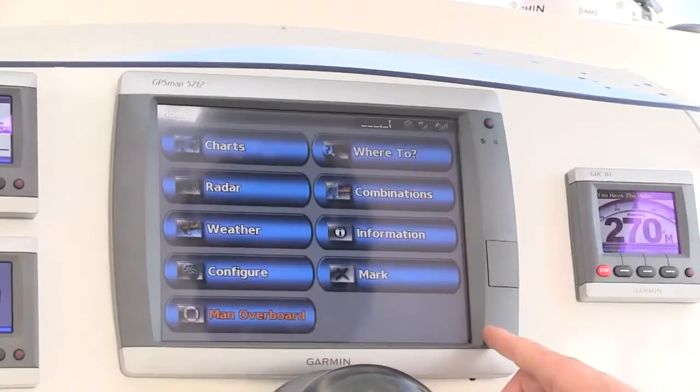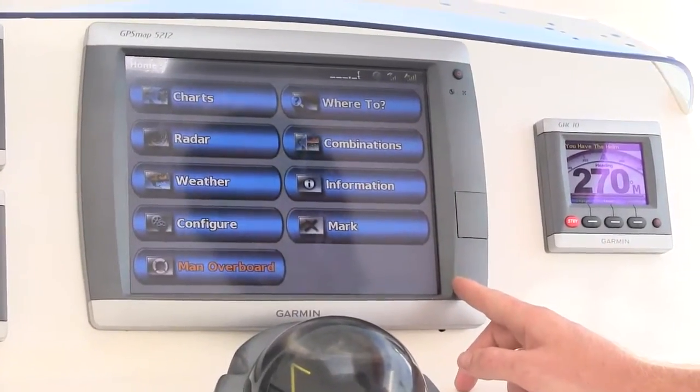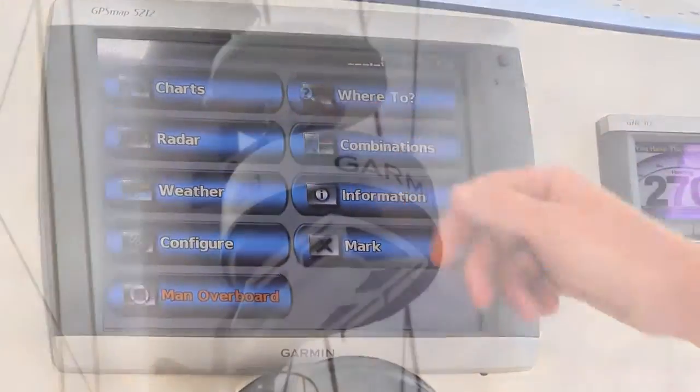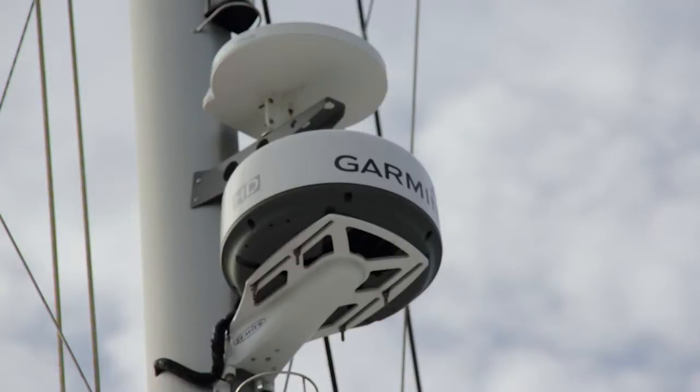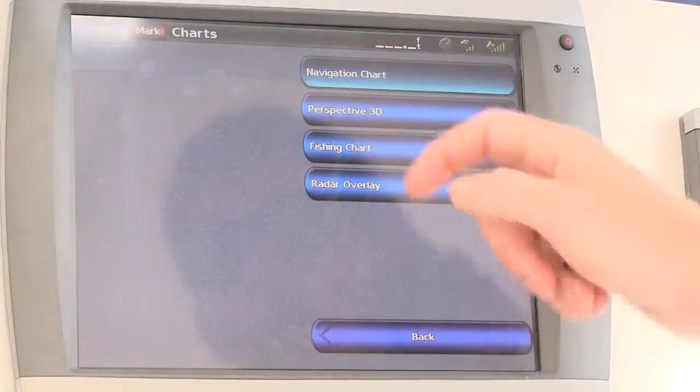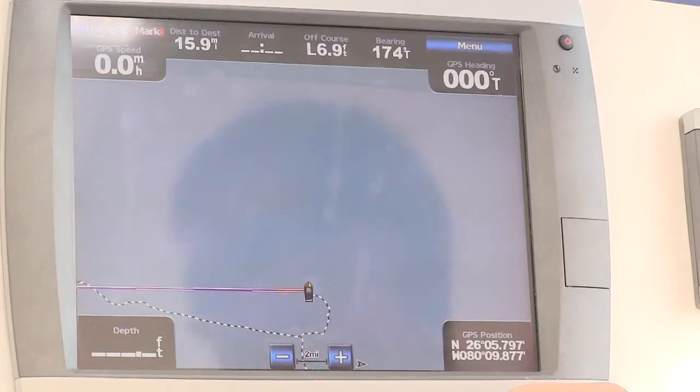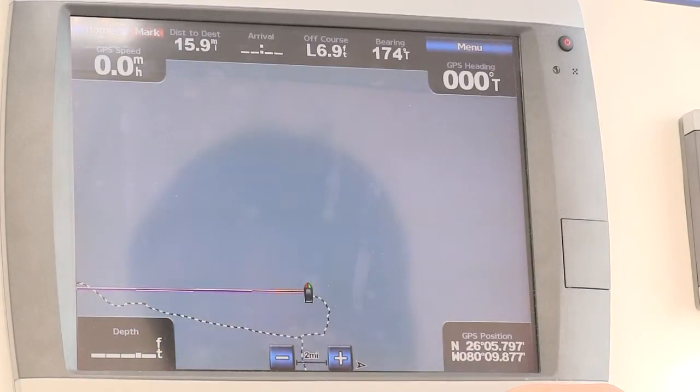Then in the middle over here we've got your multifunction display chart plotter which is a 5212. It has a number of functions. You've got your charts that you can use. You've got your navigation charts which you would use when you are sailing.